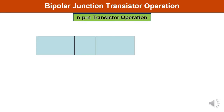Let us discuss NPN transistor operation. In the NPN transistor, N is the emitter, P is the base terminal, and N is the collector terminal. You must remember: the base-emitter junction must be forward biased.